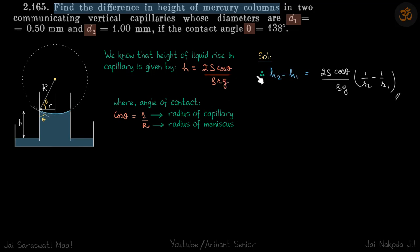Knowing this formula, we can directly write the difference in height is 2s cos θ by ρg times (1 by r2 minus 1 by r1).